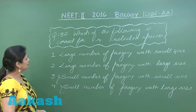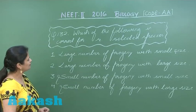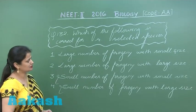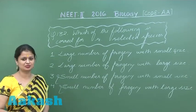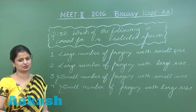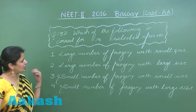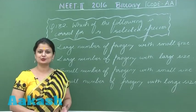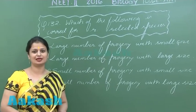In question number 132, we have to look for the right option for r-selected species. r-selected species are also known as opportunistic species, and they are associated with several features.